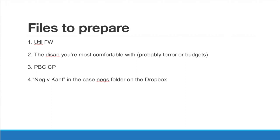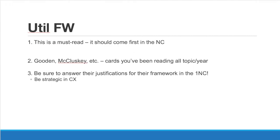The third file would be the plea-based ceilings (PBC) counter plan, which advocates for a reform of plea bargaining rather than a total abolition. And then the next is a different file called 'neg v cont,' which is in the case negs folder on the Dropbox in the Jan/Feb folder. This file contains a list of case arguments you're able to read versus the affirmative, and will also give you some tips on how to defend the counter plan versus affirmatives like these.